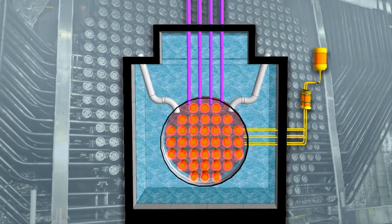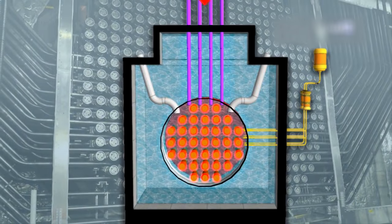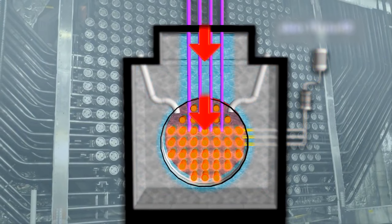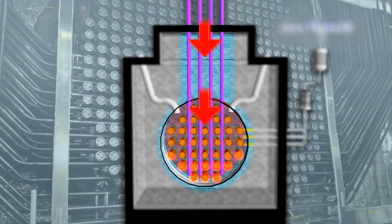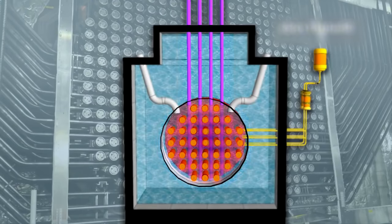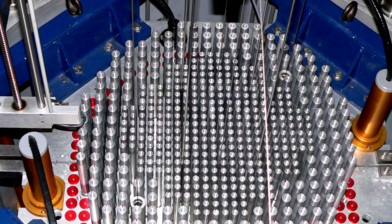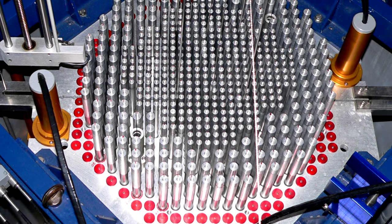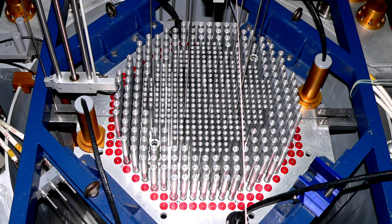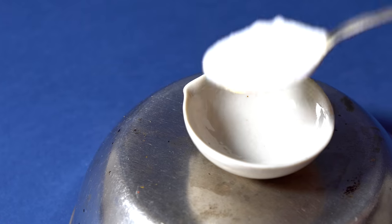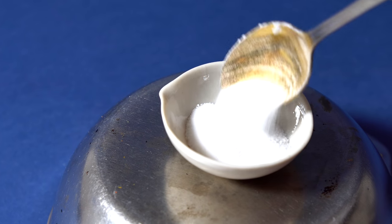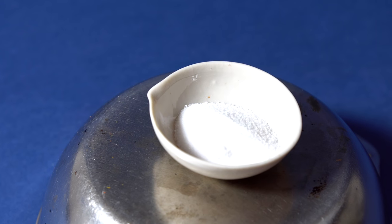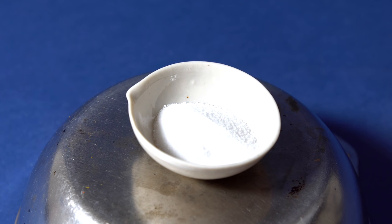A mixture of boric acid and other boron-10 compounds is used to make control rods that change the speed of the chain reaction running in the reactor, and also to suddenly stop it. For instance, such rods can be made from steel with pure boron or boron carbide.